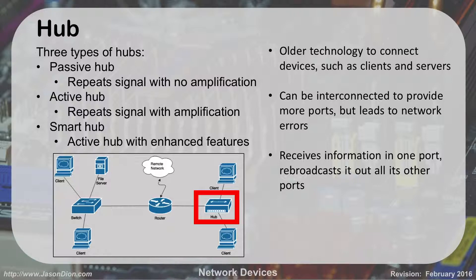For instance, if Sarah wants to talk to Joe in a network, she'd have to come to the hub, and then the hub would say, 'Hey Joe, I have a message from Sarah. Here it is.' The hub is basically the middleman passing those messages back and forth.